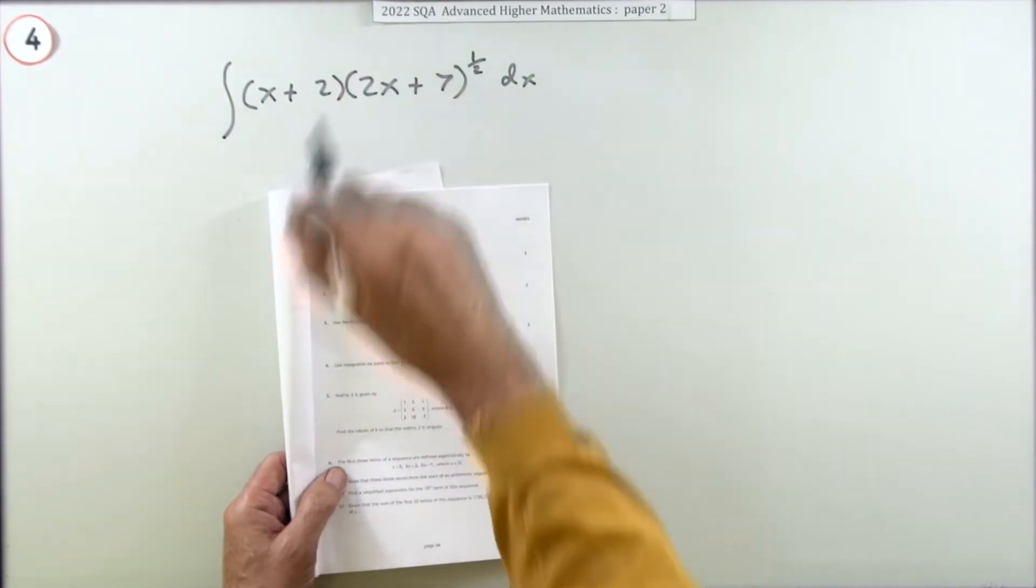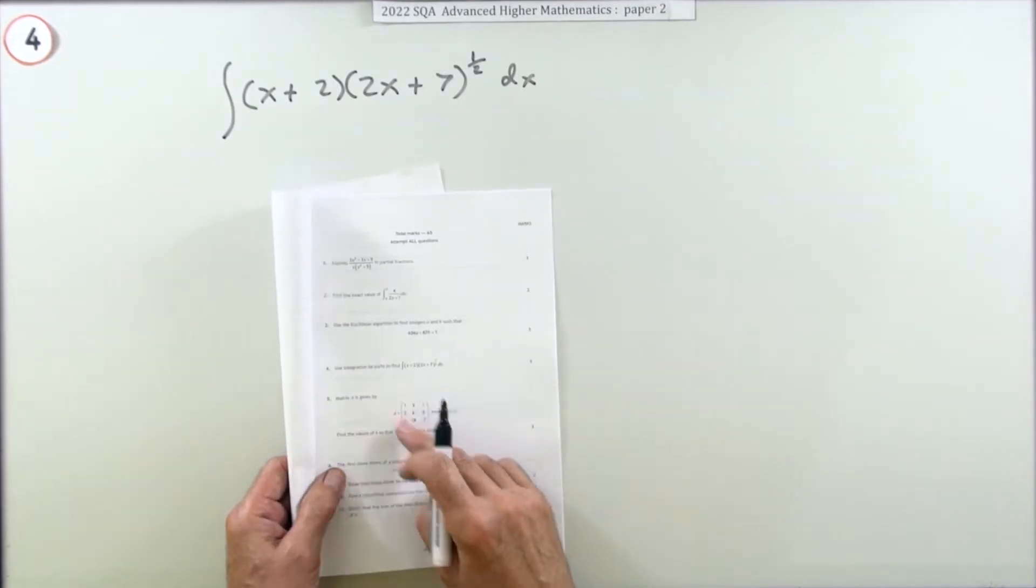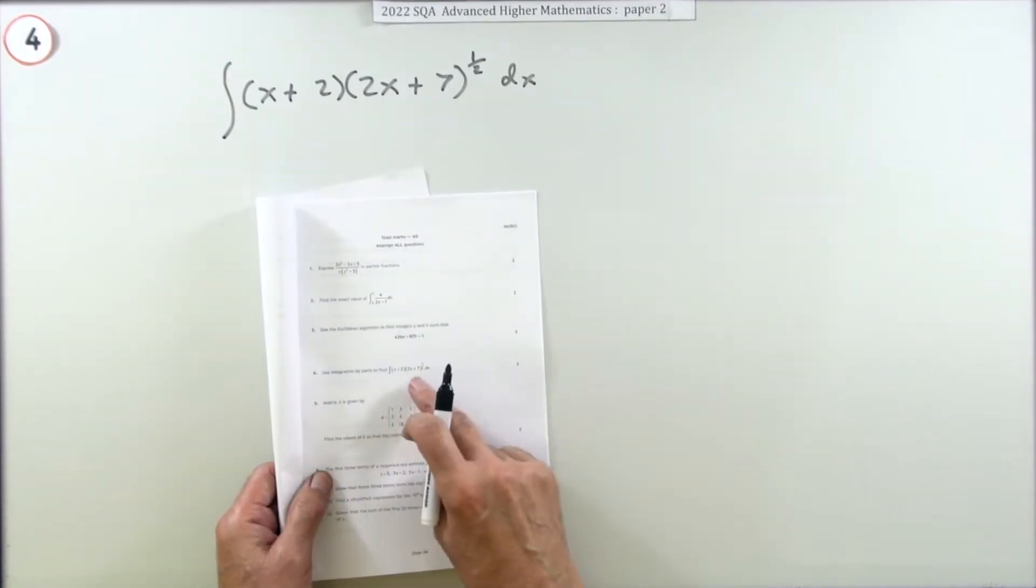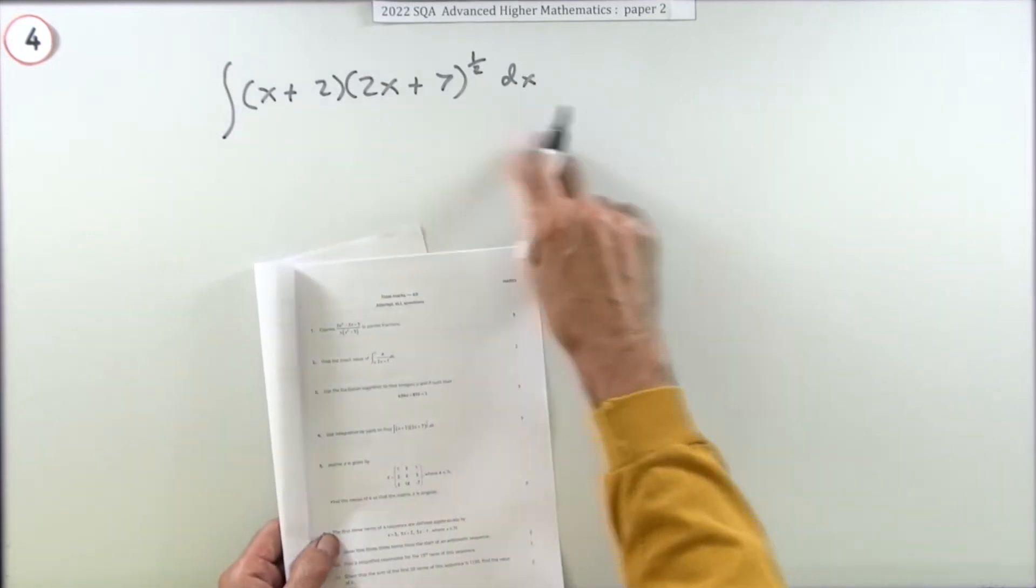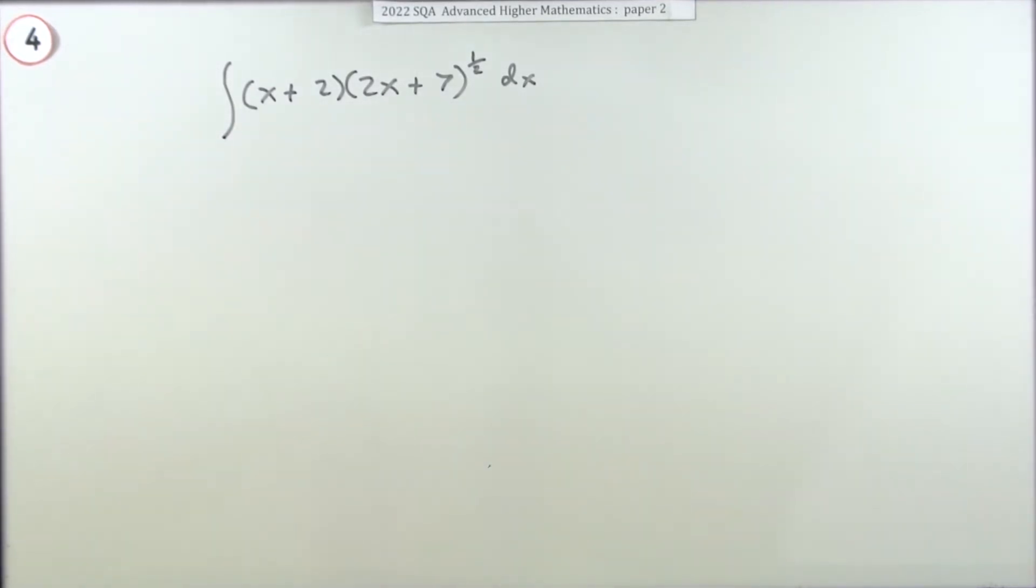So question four then from the 2022 Advanced Higher paper, paper two, three marks - integration by parts. Only three marks. So integration by parts - use integration by parts to find the expression that results from this integration.